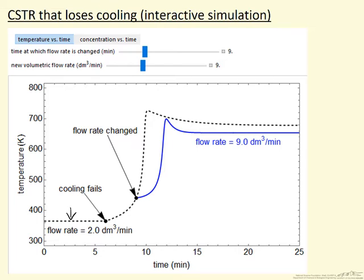What the simulation does is look at what happens as we change the delay time between when the cooling fails and when we make an adjustment, and then what happens if we use different values of the new flow rate. We're showing temperature versus time in the simulation; we can also look at concentration versus time. Let's observe the behavior.